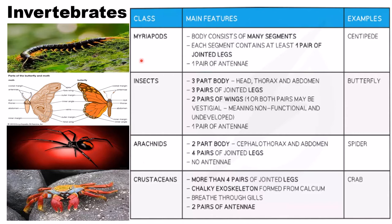In invertebrates there are four classes. Myriapods consist of many segments; each segment contains at least one pair of jointed legs and one pair of antennae — example is centipede. Insects have a three-part body: head, thorax, and abdomen; three pairs of jointed legs; two pairs of wings; and one pair of antennae. Example is butterfly.